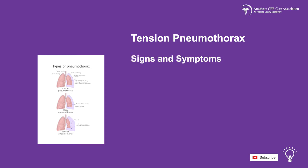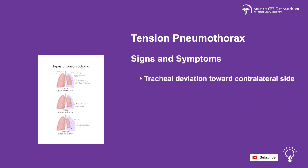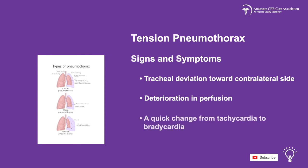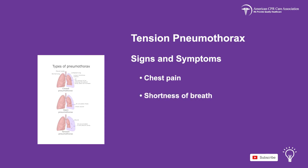Signs and symptoms of tension pneumothorax include decreased or diminished breath sounds, distended neck veins, hyperresonance on the affected side, tracheal deviation from the contralateral side, deterioration in perfusion, a quick change from tachycardia to bradycardia, chest pain, shortness of breath, low blood pressure, and cardiac arrest.